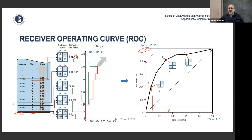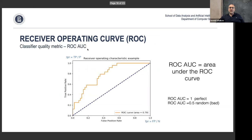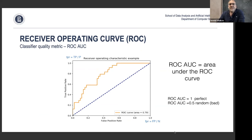A higher threshold gives fewer true positives but also fewer false alarms; a lower threshold gives more true positives but also more false alarms. In a perfect world you'd be in the top-left corner, but you'll always be along some curve. That curve has a name: the ROC curve, or Receiver Operating Characteristic curve — a concept going back to World War II radar operation.